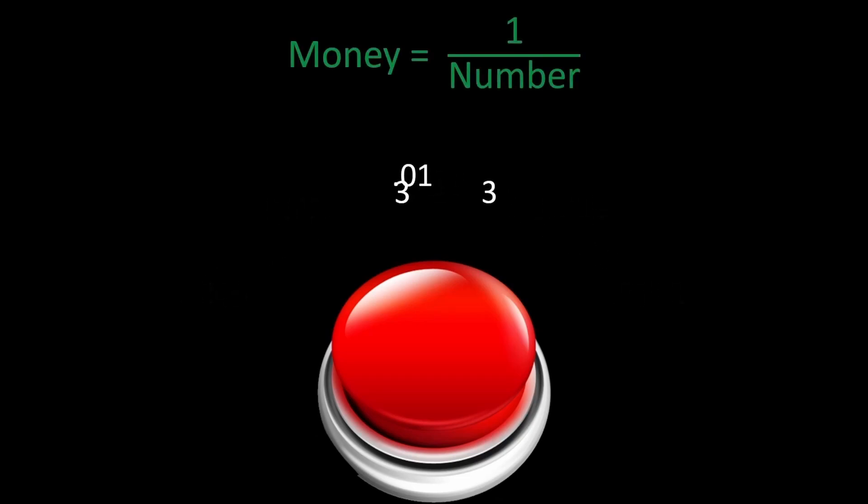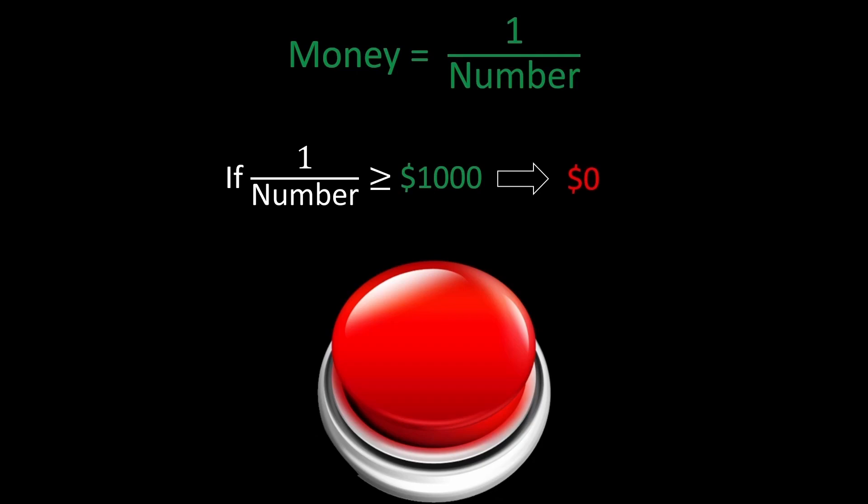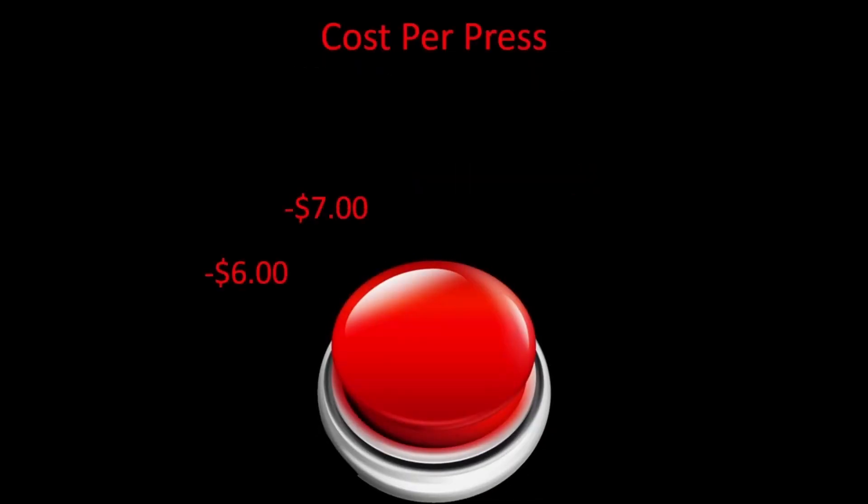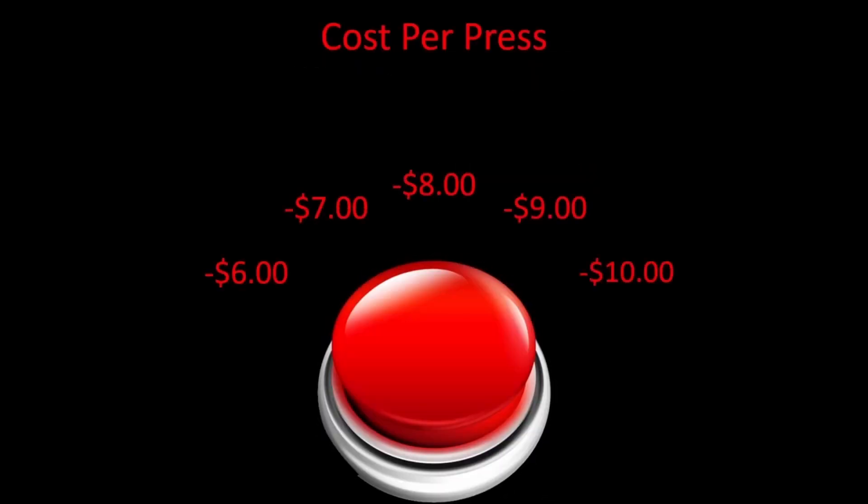For example, if you got the number .0133, you would win 1 divided by .0133, which is about $75. The catch is, if you roll a number that gives you $1,000 or more, you lose all your money up to that point and get $0. The first press costs $6 and goes up by $1 on each press afterwards.